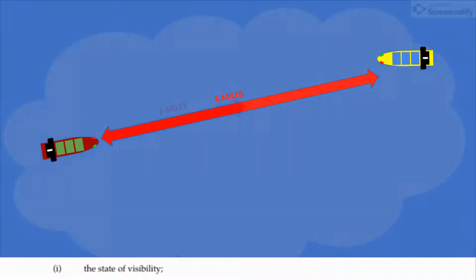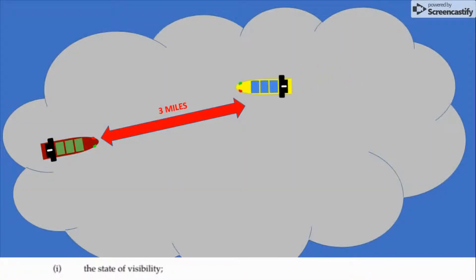However, this might be reduced down to 3 miles in restricted visibility. So, that would determine a slower speed to be a safe speed, because we can't see as far.